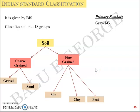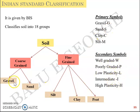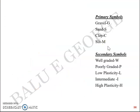So gravel is G, sand is S, clay is C, silt is M. The secondary symbols include: W for well-graded, P for poorly-graded, L for low plasticity, I for intermediate plasticity, H for high plasticity, and N. Based on combinations of primary and secondary symbols, you can classify and give notations to each soil type. Peat is represented by PT — it's rarely encountered but nonetheless given that symbol.